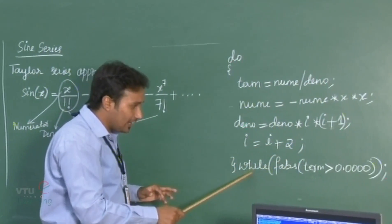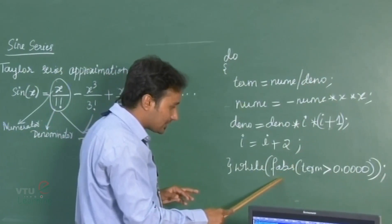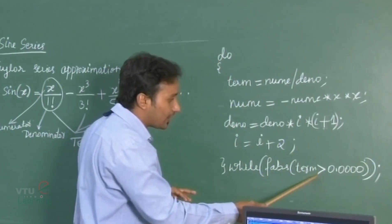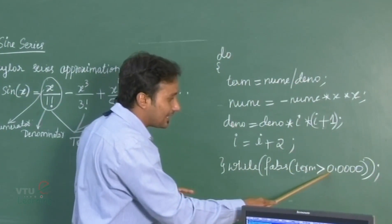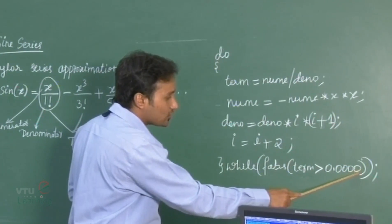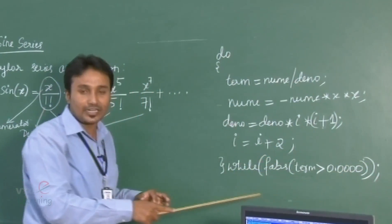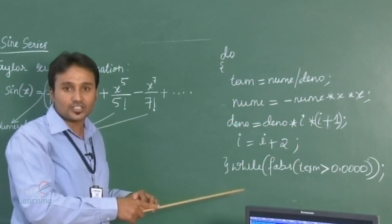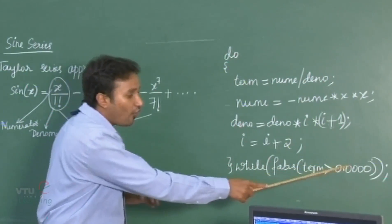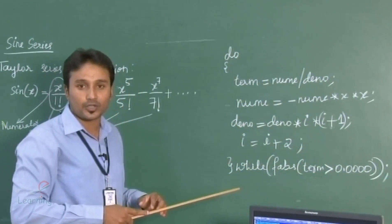At the last we have i equals i plus 2. The while condition checks while fabs of term is greater than 0.0001, which means it checks for a maximum of 4-digit decimal accuracy.